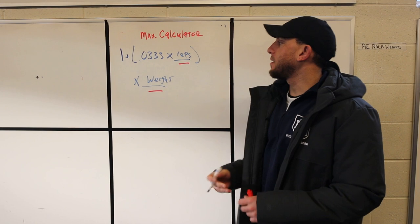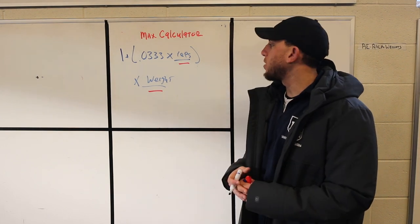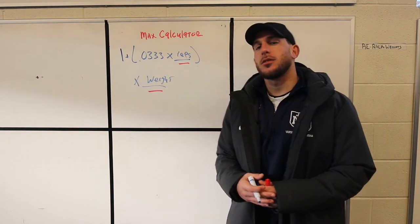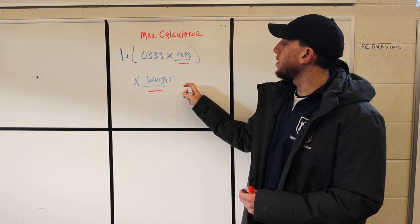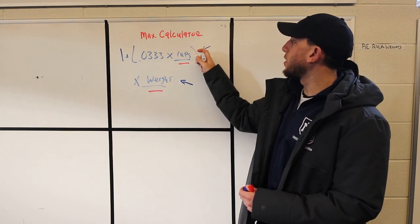For example, let's say I did squat, 200 pounds for 5 reps. The 200 goes in for weight and the 5 goes in for reps.